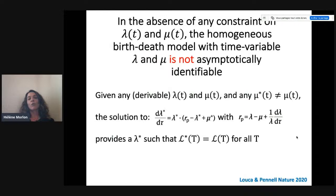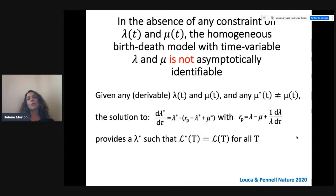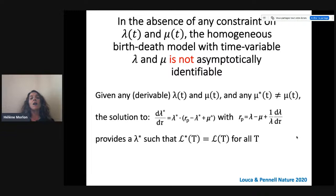Finally, we arrive at the result by Louca and Pennell, which showed that in the absence of any constraint on lambda and mu, the homogeneous birth-death model with time-variable lambda and mu is not asymptotically identifiable. Louca and Pennell showed this by demonstrating that if we take any differentiable, continuous functions lambda and mu, and choose any other function mu-star, we can solve a differential equation giving another solution lambda-star such that for any given tree, the likelihood of the model constructed on lambda-star and mu-star equals the likelihood of the original model. This clearly shows that the continuous birth-death model is not asymptotically identifiable.